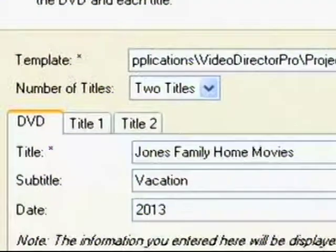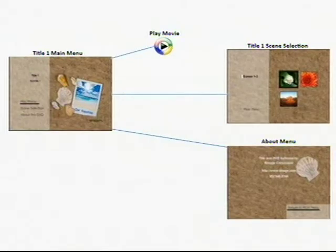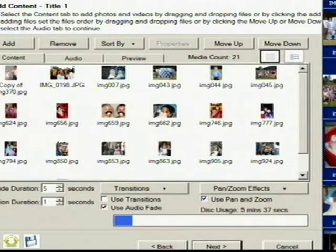Here's where we decide to make one title or two. We're going to create two titles — placing all the photos in the first title and the video files in the second. Just to be clear about the titles, here's a diagram of the menu with one title, which shows a Play Movie button and a Scene Selections button. The menu with two titles will have one main menu and two sub-menus, which will allow you to play the slideshow separately from the videos.